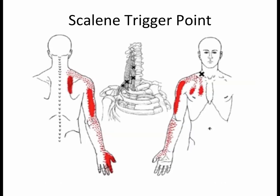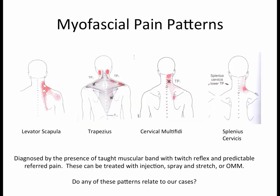Trigger points in muscles like the scalenes can cause radiation of pain even down into the fingers, but it's more likely dull and achy rather than sharp or electric, and shouldn't produce reflex changes or strength loss as seen with nerve involvement. Other trigger points in the levator scapulae, trapezius, multifidi, and splenius can be treated with OMM, injections, or spray and stretch — a cold spray followed by stretching of the muscle to break up the fibrotic trigger point.